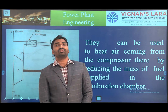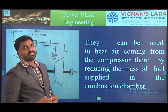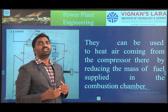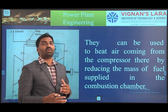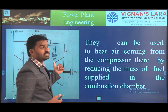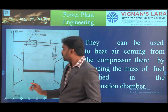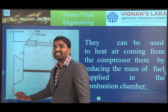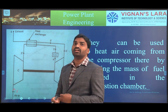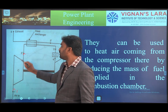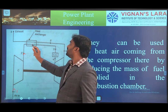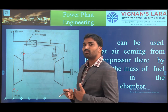The exhaust gases from the turbine carry a large quantity of heat since their temperature is far above ambient temperature. This energy can be used to heat the air coming from the compressor, thereby reducing the mass of fuel supply in the combustion chamber. In the regeneration diagram, stage 1 is air taken from the atmosphere entering the compressor. The process from state 1 to state 2 is the compression process.